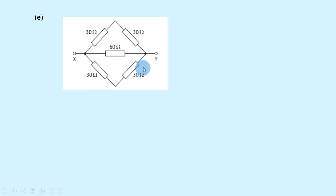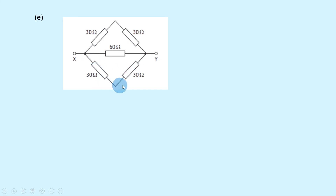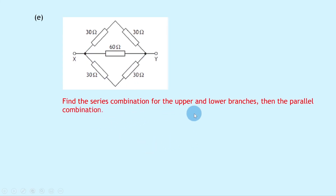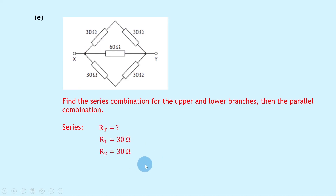Lastly, Part E shows another complicated looking circuit, but we just break it down into parts. We're trying to find the total resistance between x and y. We have two 30 ohm resistors in series in the upper branch — don't be fooled by the corner, they are still in series — a 60 ohm resistor in parallel with that, and another series combination of two 30 ohm resistors in the lower branch. The series combination gives RT equals 30 plus 30, which is 60 ohms.